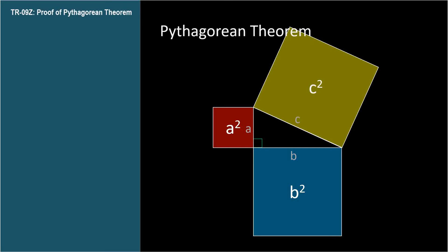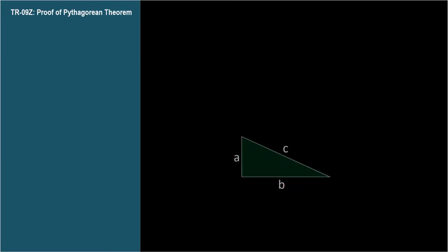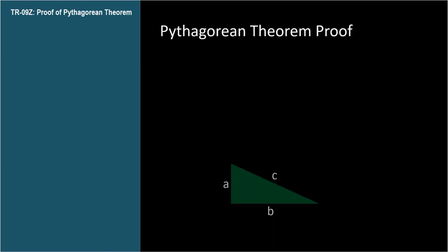There are over 300 proofs of the Pythagorean Theorem. I'll show a graphical one that I like. We start with a right triangle. The size or shape doesn't matter as long as one vertex is 90 degrees. That's the point. This reasoning will work for all right triangles.